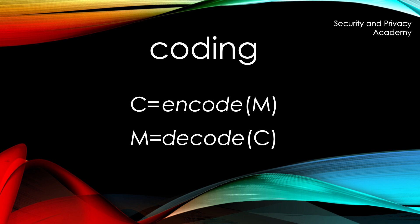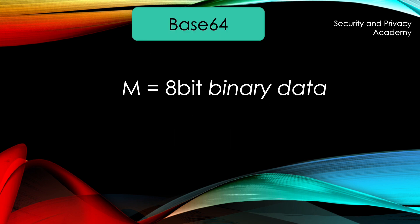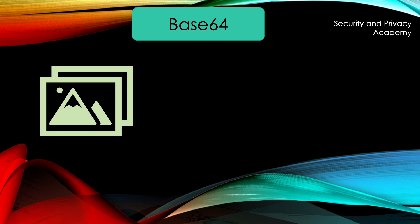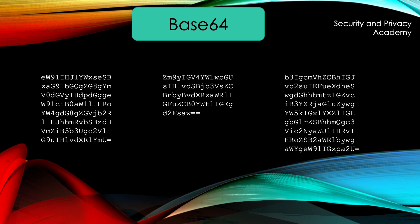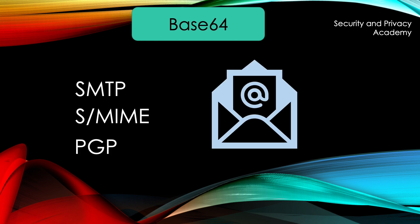In today's video, we are covering Base64 encoding, which is used to transform 8-bit binary data into ASCII text. This includes pictures, videos, or even ciphertext. Those can be transformed to normal text blocks to be used by protocols that can only process plain text. Such protocols include the email protocols SMTP, SMIME, and even PGP.